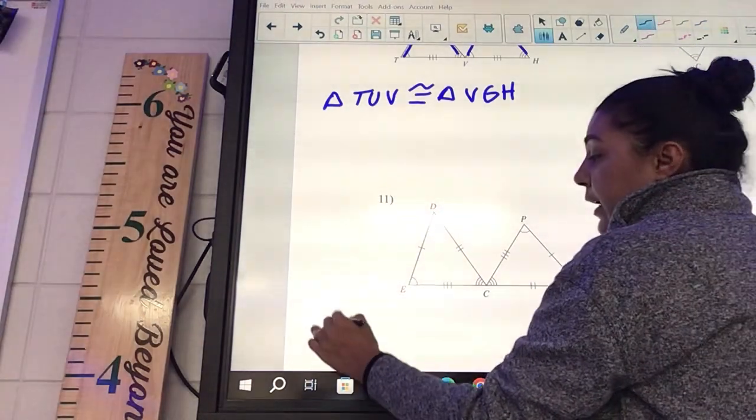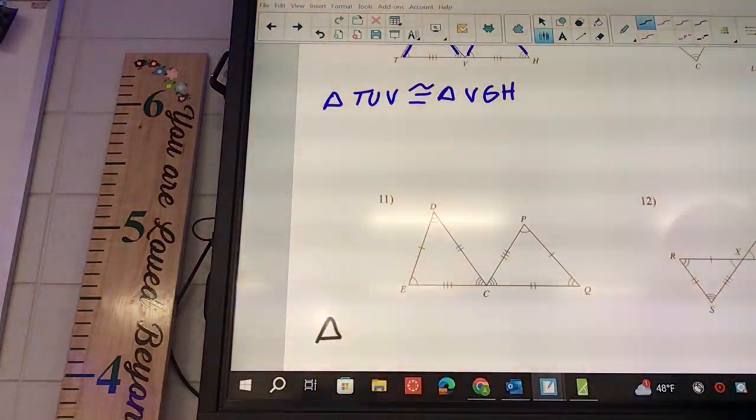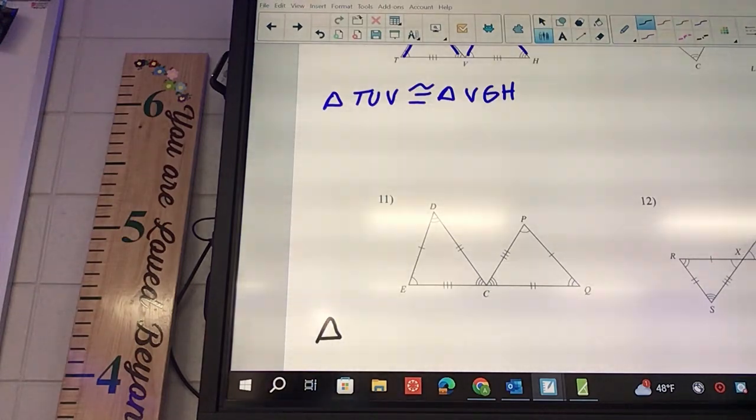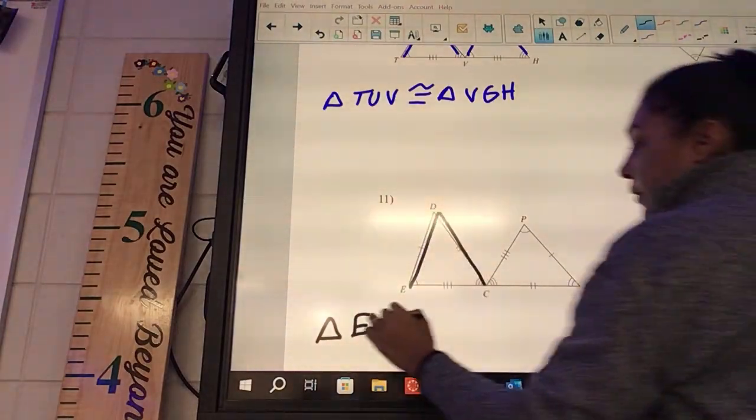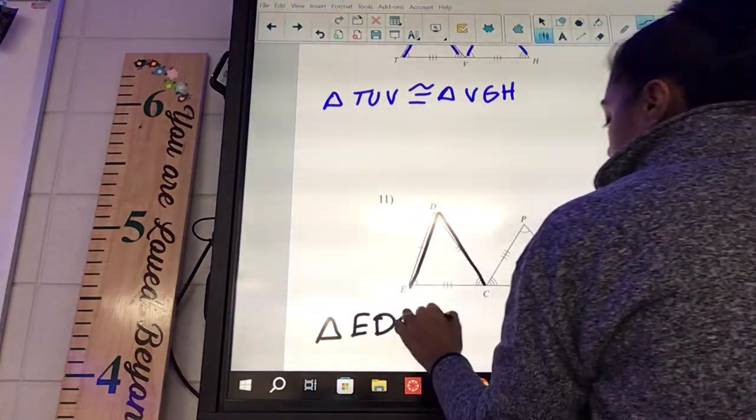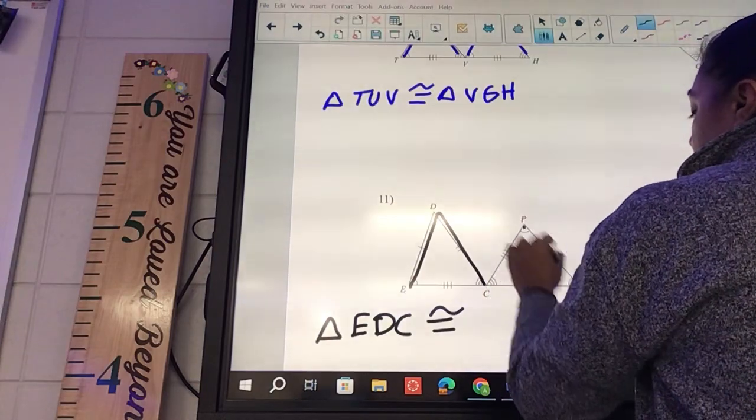Triangle - where are we starting on 11? What one's coming first? E to what? EDC is congruent to PQC.